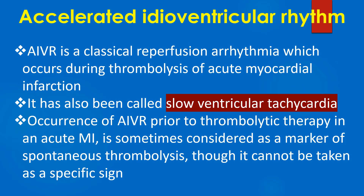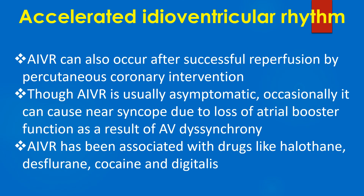AIVR is a classical reperfusion arrhythmia which occurs during thrombolysis of acute myocardial infarction, and has also been called slow ventricular tachycardia. Occurrence of AIVR prior to thrombolytic therapy in acute MI is sometimes considered a marker of spontaneous thrombolysis, though it cannot be taken as a specific sign. AIVR can also occur after successful reperfusion by percutaneous coronary intervention. Though AIVR is usually asymptomatic, it can occasionally cause near-syncope due to loss of atrial booster function as a result of AV dyssynchrony. AIVR has been associated with drugs like halothane, desflurane, cocaine, and digitalis.